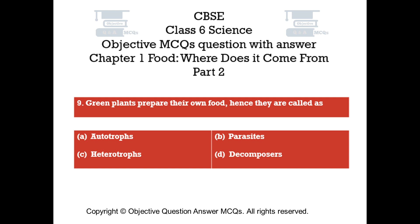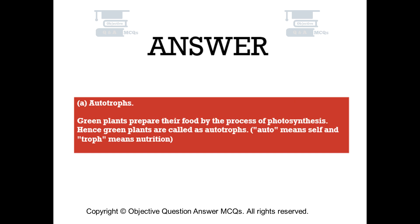Question number 9. Green plants prepare their own food, hence they are called: Option A: Autotrophs. Option B: Parasites. Option C: Heterotrophs. Option D: Decomposers. The right answer is Option A. Green plants prepare their food by the process of photosynthesis, hence they are called autotrophs. Auto means self and trof means nutrition.